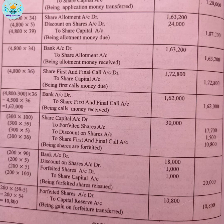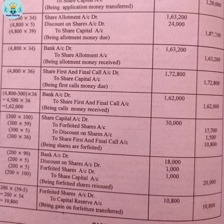For the forfeiture entry: share capital account is debited. The credit side has discount on shares and share first and final call account. The forfeited share value is calculated as: 36 + 5 (discount) = 41; and 100 − 41 = 59. So the forfeited share balance per share is Rs.59.